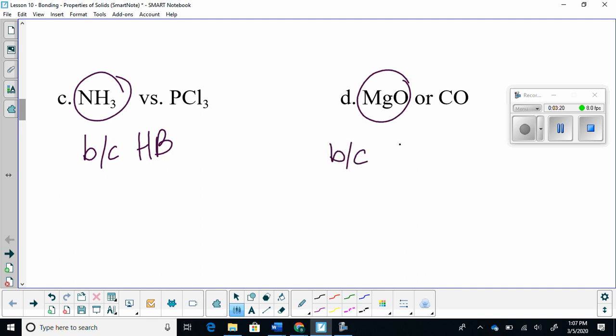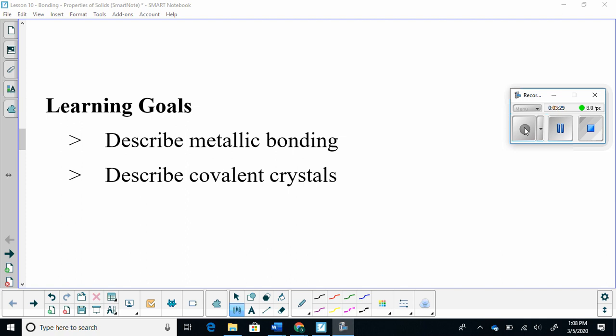And as we realized, ionic bonds are some of the hardest bonds to bring to a boil. Today's learning goals are to describe metallic bonding and describe covalent crystals.